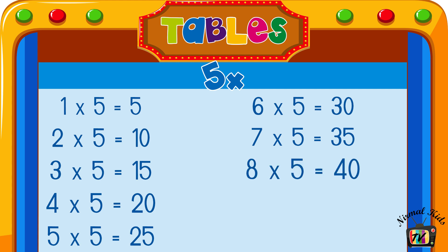8 into 5 is equal to 5. 9 into 5 is equal to 45.